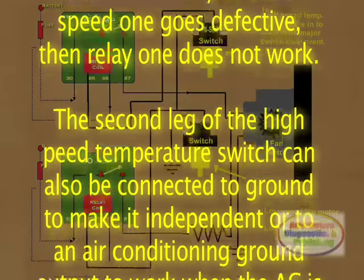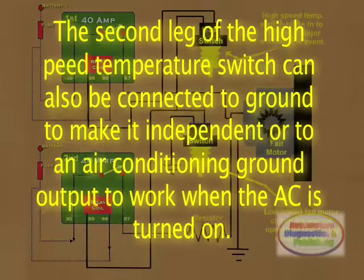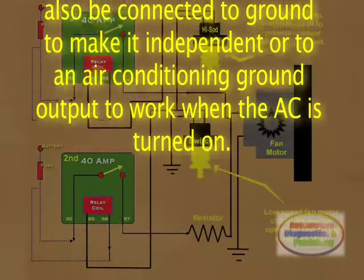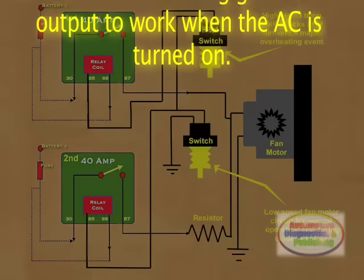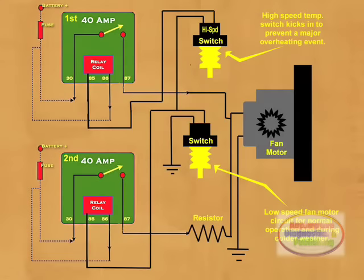The second leg of the high speed temperature switch can also be connected to ground to make it independent, or to an air conditioning ground output to work when the AC is turned on. This configuration was chosen to make it easier to diagnose if a future issue arises and to show various forms of wiring this circuit.